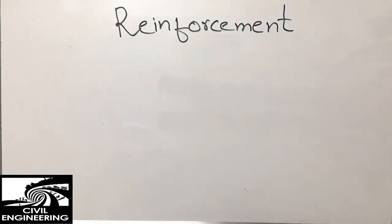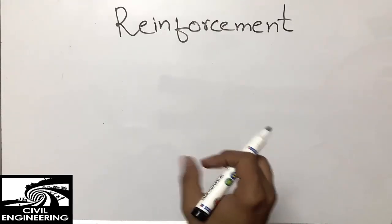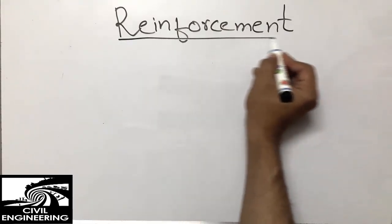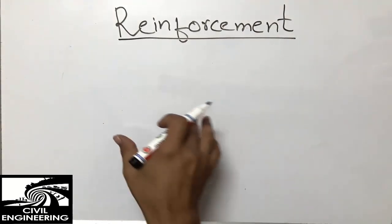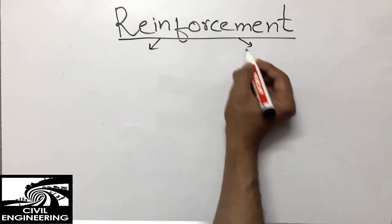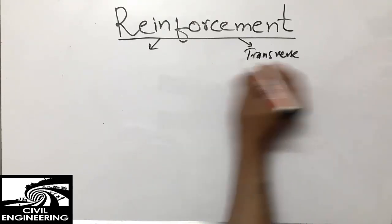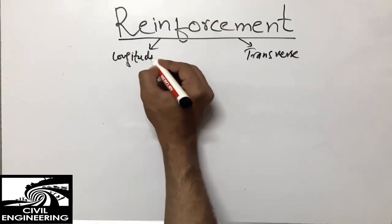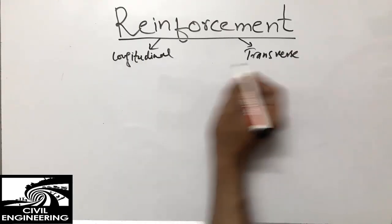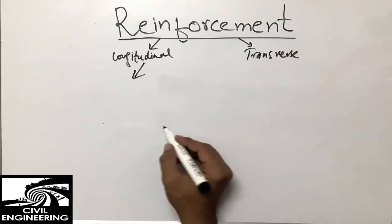Hello guys, welcome to the C1 Engineering YouTube channel. Please subscribe for more civil engineering updates. Today we are going to discuss the difference between transverse and longitudinal reinforcement. There are two types of reinforcement mainly used — longitudinal and transverse — and these are the two main types used in structural members.